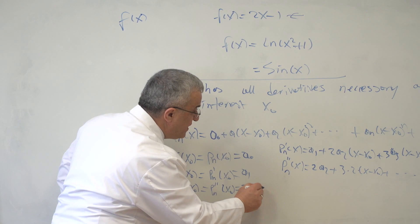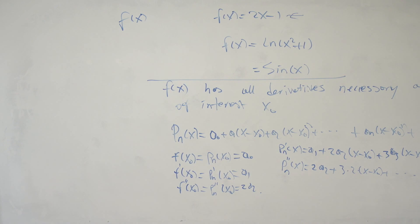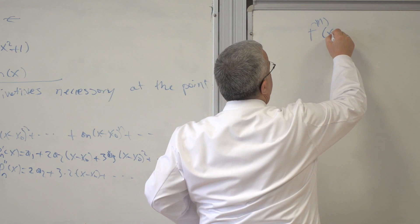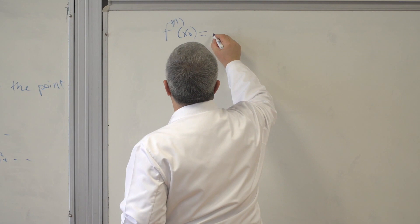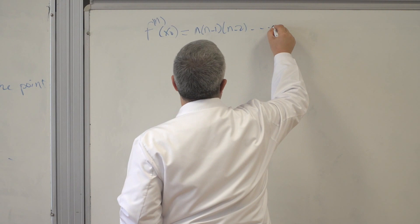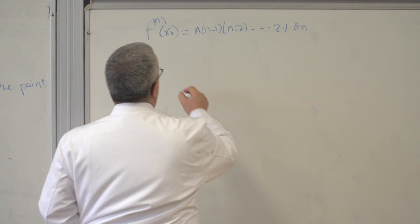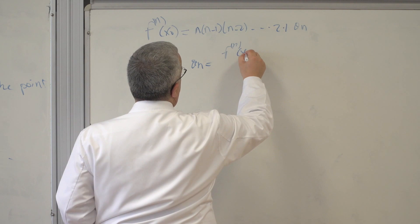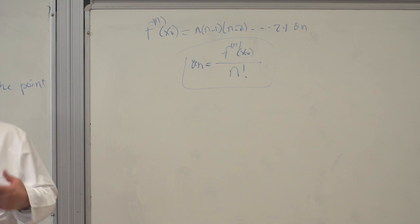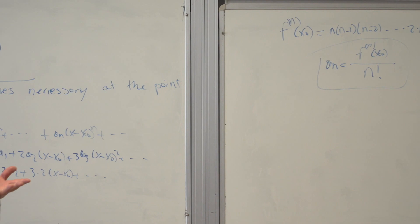You can see that if I continue like that, after the n-th derivative, what do I have? The n-th derivative of f at x₀, if I require this, equals n·(n−1)·(n−2)·…·2·1·aₙ. So aₙ equals the n-th derivative of f calculated at x₀ divided by n factorial. This is how Taylor series comes into life — just asking two functions to match each other as much as possible.